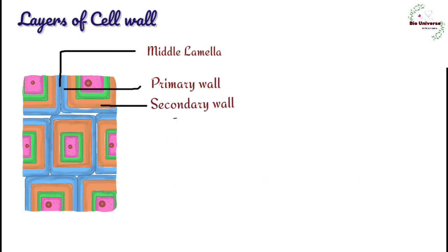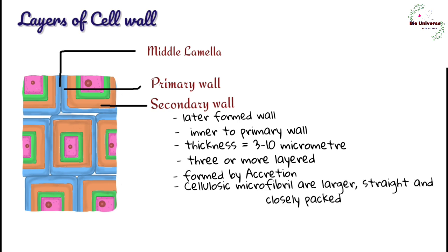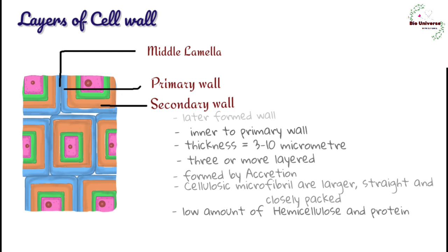C. Secondary wall, it is later formed wall of cell. It is laid inner to primary wall. Wall is thick with 3 to 10 micrometers thickness. It is made of three or more layers. Development and thickening of secondary wall occurs by accretion or laying down of materials over existing structure. Amount of cellulose is higher at 20 to 40%. Cellulose microfibrils are longer with 4 to 7 micrometers thickness and have closed parallel arrangement. Hemicellulose and protein content is low. Matrix has low hydration, up to 30 to 40%.